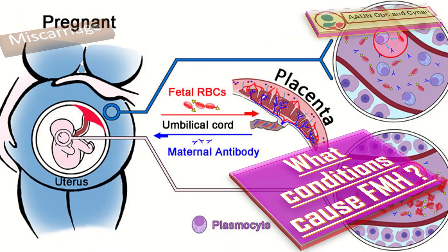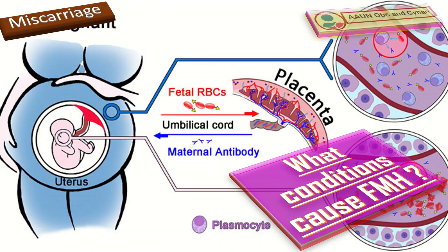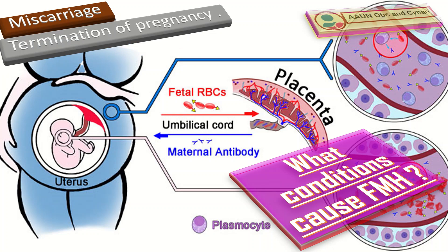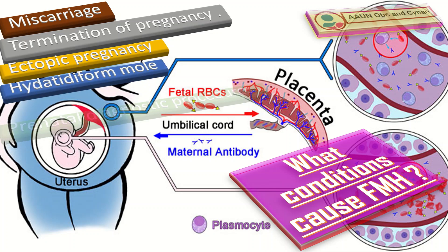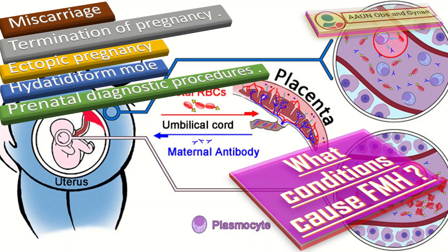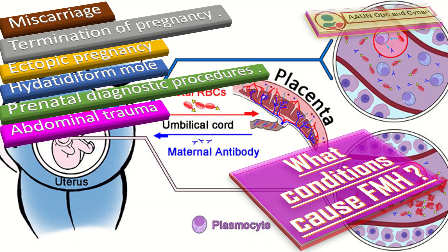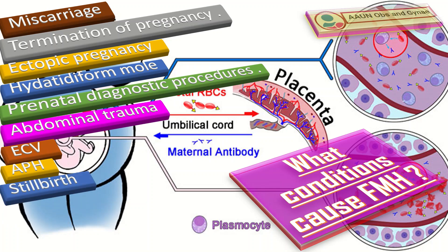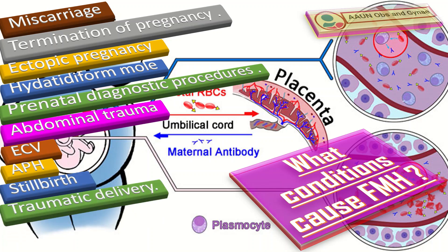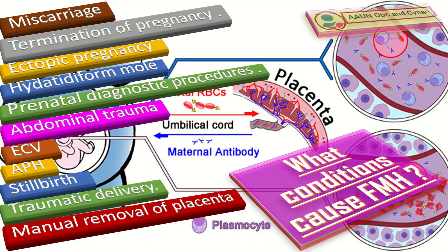The conditions that cause fetomaternal hemorrhage include: miscarriage or threatened miscarriage of more than 12 weeks of gestation, medical or surgical termination of pregnancy at any gestation, ectopic pregnancy, hydatiform mole, prenatal diagnostic procedures like chorionic villus sampling or amniocentesis, abdominal trauma, external cephalic version, antepartum hemorrhage, stillbirth, and traumatic delivery including cesarean section and manual removal of placenta.